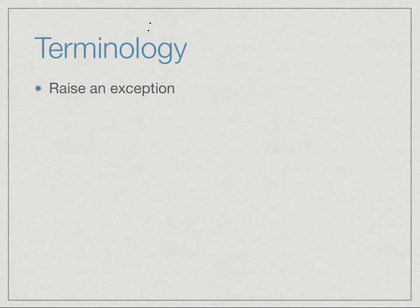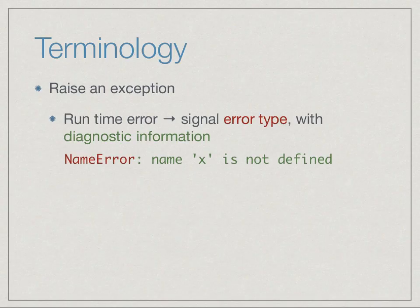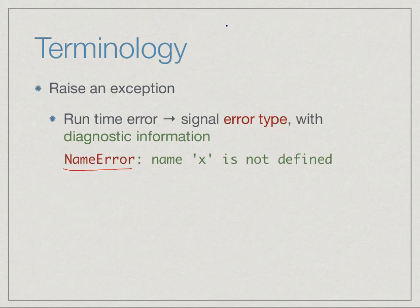Let us settle on some terminology. The act of signaling an error is called raising an exception. When the Python interpreter detects an error, it gives us information in two parts: the type of error — whether it is a NameError, IndexError, or ZeroDivisionError — and secondly, some diagnostic information telling us where this error occurs. It's not enough to just say some value was not defined; it tells us specifically that the name x is not defined, giving us a hint as to where the error might be.